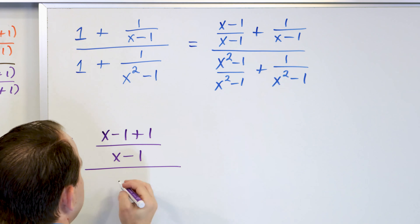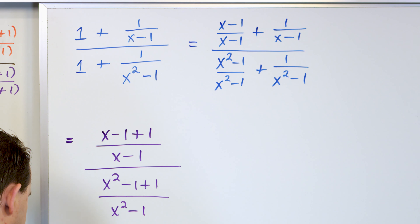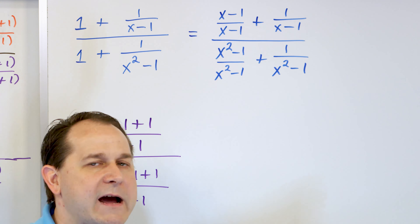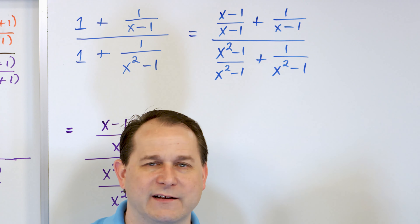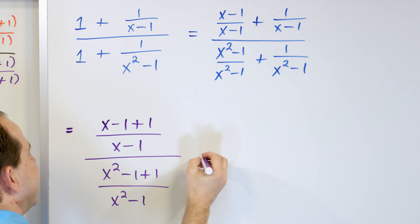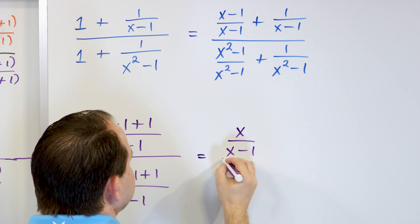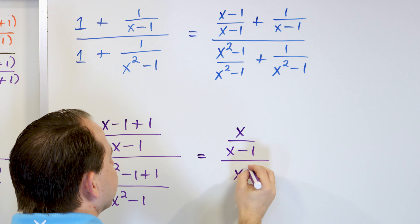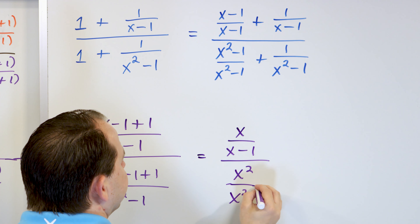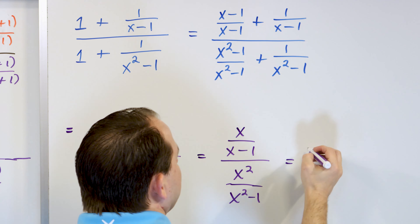In the bottom I'll do the same thing: write 1 as (x²-1) over (x²-1). Now I have a common denominator. Adding gives (x-1) plus 1 over (x-1) in the numerator, and (x²-1) plus 1 over (x²-1) in the denominator. I'm not combining yet — I don't want to do too many things at once. In the next step: the negative 1 and positive 1 cancel to give x over (x-1), and x² over (x²-1).